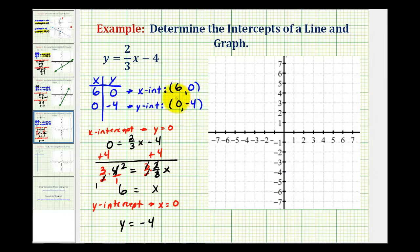Now, let's go ahead and graph our line. The x intercept is equal to six. Y intercept is equal to negative four. So, our line passes through these two points.